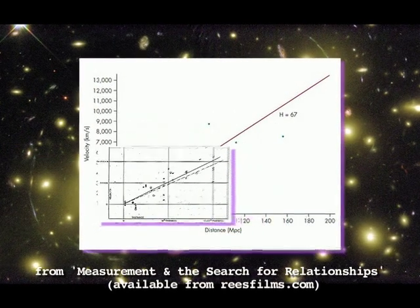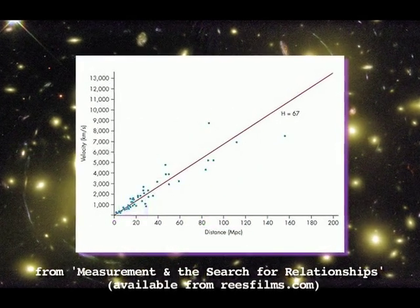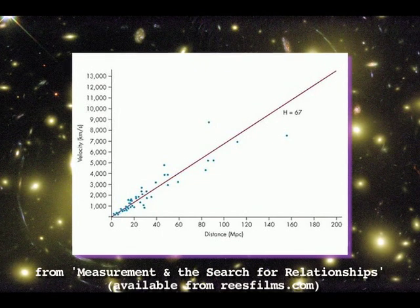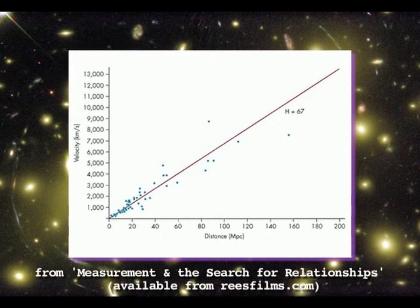Here is more recent data on a bigger scale. You can see that more distant galaxies are not exactly on the line.